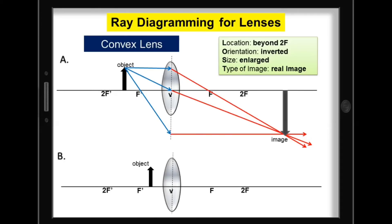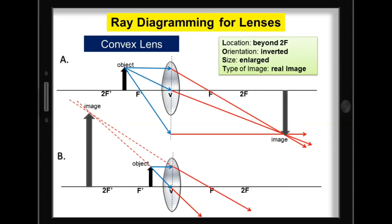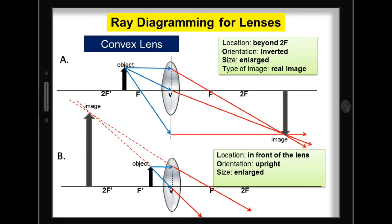For B, the object is located between F and V. We can use the PF ray and the V ray. Since the refracted rays did not merge, let us extend the refracted rays in front of the lens using virtual refracted rays. Notice the merging of the virtual refracted rays in front of the lens. To describe the image: for the location, it is in front of the lens; orientation, upright; size, enlarged; and the type of image, it's a virtual image. We can conclude that a convex lens can give you either a virtual or real image, and that depends on the distance of the object from the lens.